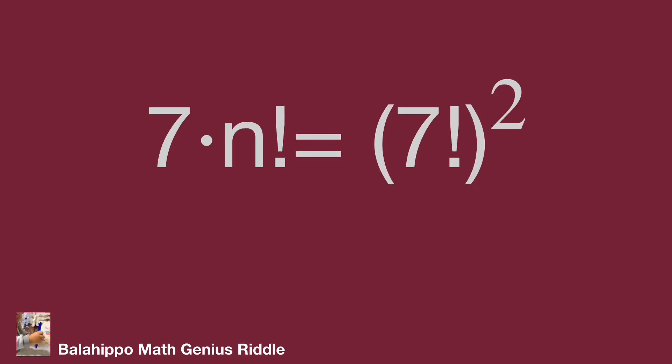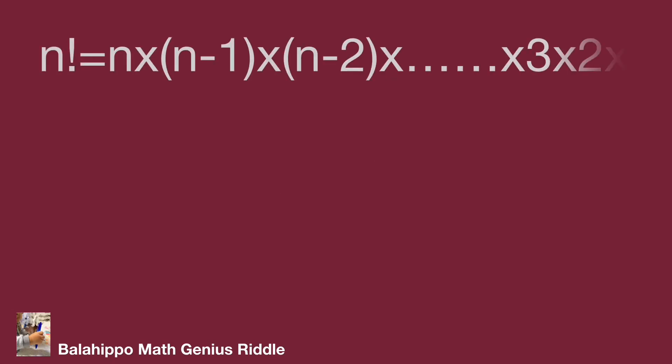The question: 7 times n factorial equal to the quantity 7 factorial squared. There are two factorial items in this given equation. First, what is the factorial? The definition for factorial is: n factorial equals n times (n minus 1) times (n minus 2), decreasing by 1 each time, down to 3 times 2 times 1.